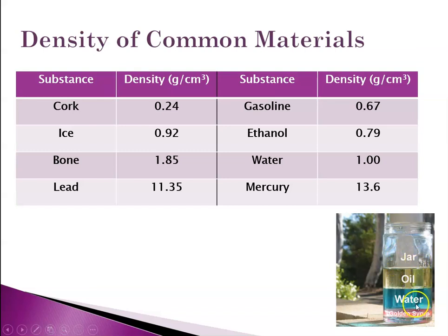These are some common things. Down here, I have a jar that has oil, water, and golden syrup, just kind of like corn syrup. And you'll see that they're going to line up according to the differences in their densities. And again, these are just some common things that you see in everyday life. Notice that water has a density of 1 gram per cubic centimeter.